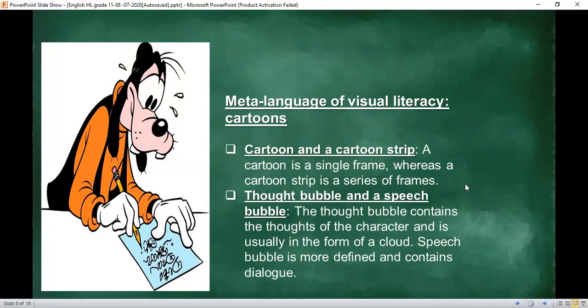All these tools are called the meta-language of visual literacy. A cartoon is a simple drawing with a single frame. But when there's more than one, when there's a series of frames, that is called a cartoon strip.